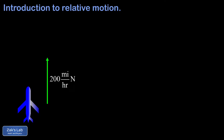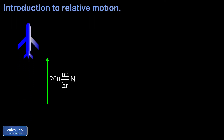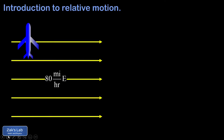In our example we have an airplane moving 200 miles per hour to the north with respect to the air. In other words, the engines are capable of pushing the plane at 200 miles per hour through the air. But suppose we're also told the air is moving at 80 miles per hour to the east with respect to the ground.